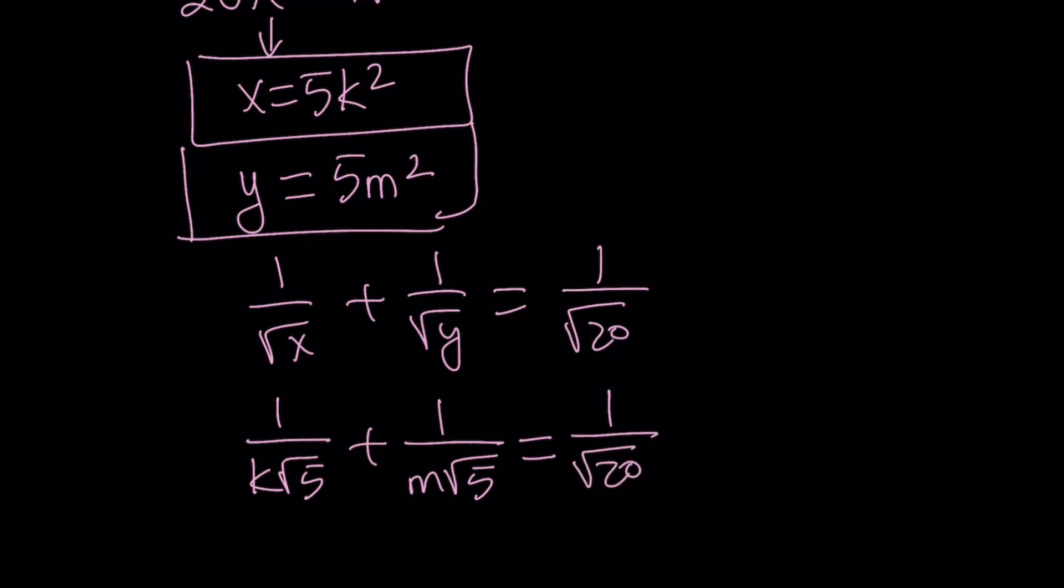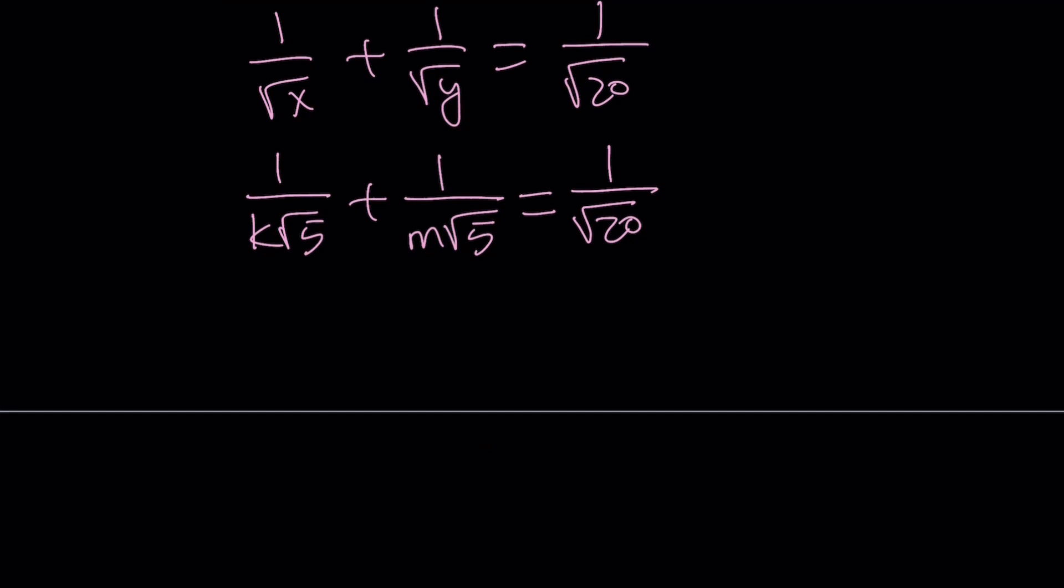Obviously k and m have to be positive because if they're not, then you're going to get a negative expression on the left-hand side. This is really nice because we can basically take out 1 over square root of 5.